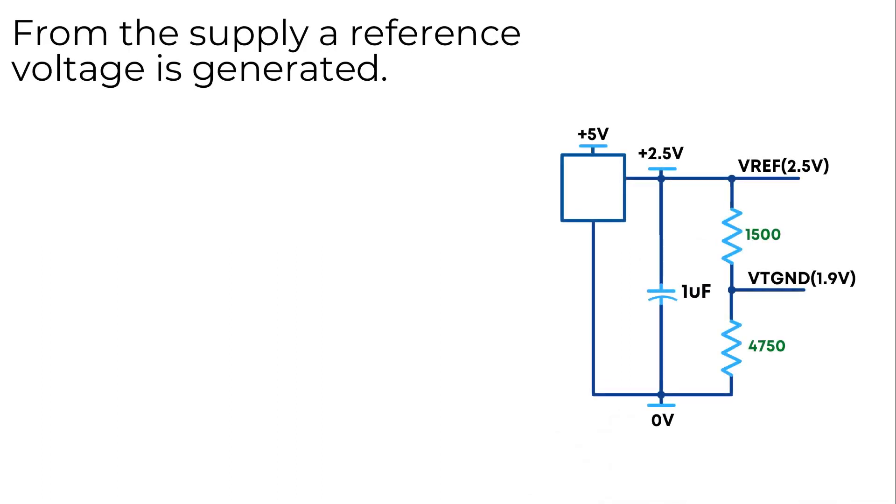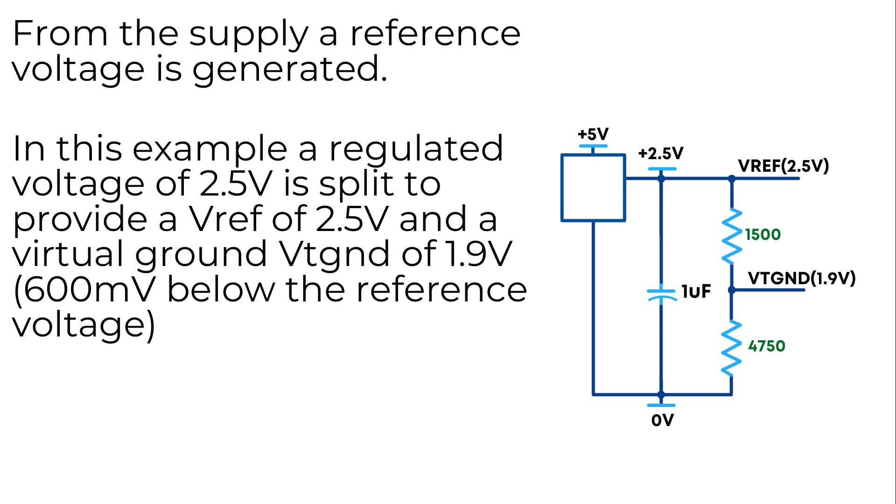Here is an example of how a bias voltage can be achieved. We have a supply voltage of 5 volts which is being regulated to provide a stable voltage of 2.5 volts.